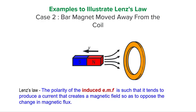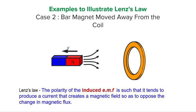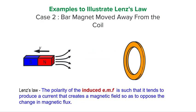Pause the video now and first predict what will be the direction of the induced current in the coil, then play the video to check your answer. In this case, as the bar magnet moves away from the coil, the coil experiences a decrease in flux linkage. By Lenz's Law, there will be an induced EMF that sets up an induced current to oppose this decreasing magnetic flux linkage experienced by the coil.